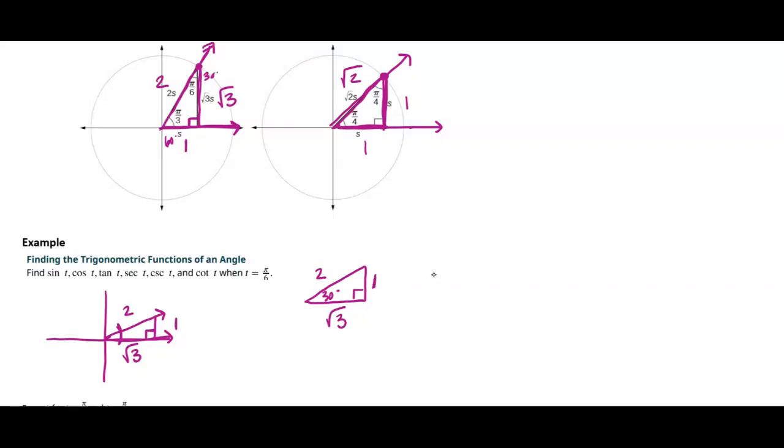Then we can use all of our trig ratios in order to find the sine of that angle. So that's going to be opposite over hypotenuse, adjacent over hypotenuse, opposite over adjacent.